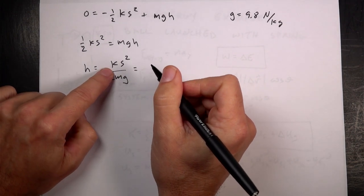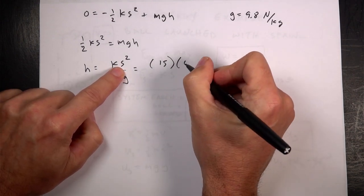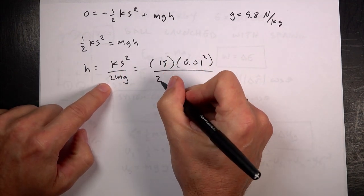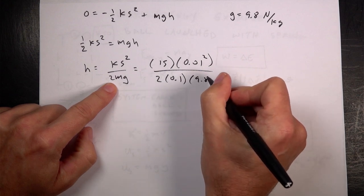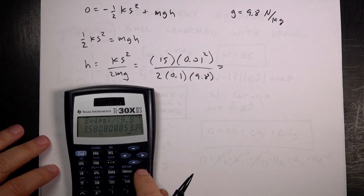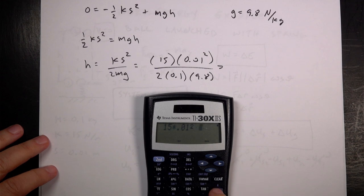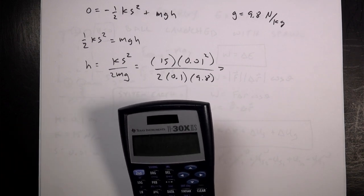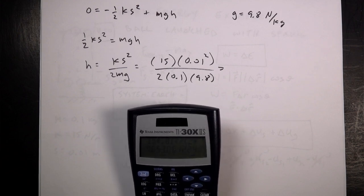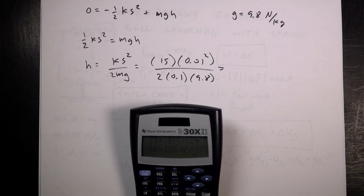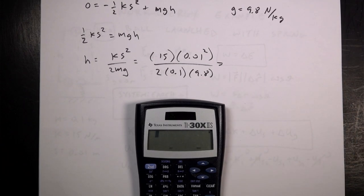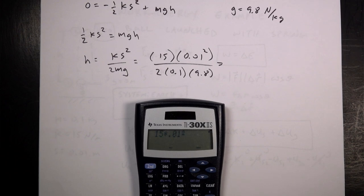I don't know the answer because I just kind of picked some numbers. But let's put in my values. I had k is 15. I'm going to leave off the units. s was 0.01 squared. And then I'm going to divide by 2 times the mass of 0.1 and g was 9.8. So let's see how high this thing goes. I'm going to have 15 times 0.01 squared divided by parentheses 2 times 0.1 times 9.8 close parentheses equals. And I get, no way, it doesn't go up high at all. I guess I picked some poor numbers. Let me just recalculate that. 15 times 0.01 squared. Yeah, I guess that would be pretty small.